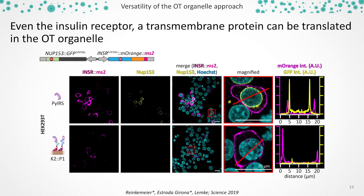Next, we wondered whether our organelles could also participate in more complex translation — for example, translation of transmembrane proteins that need to be inserted into the ER during translation. We developed another dual-color reporter, now with two structural proteins that have specific subcellular localizations. As a reference, we used nucleoporin 153 tagged with GFP, and we tried to selectively express the insulin receptor with M-Orange, also tagged with MS2 loops. Gratifyingly, when we use the synthetic organelle, no nucleoporin is produced, but we can still see nice rims at the plasma membrane shown in magenta, indicating the insulin receptor. This works nicely and selectively.